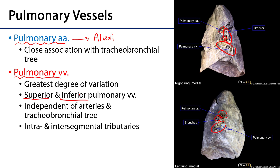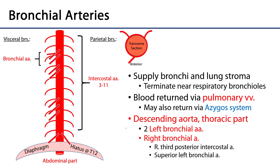When we think about volume, these pulmonary vessels are receiving 100% of the cardiac output — so everything coming from the right ventricle is going through this pulmonary circuit. We can contrast that with the bronchial arteries.